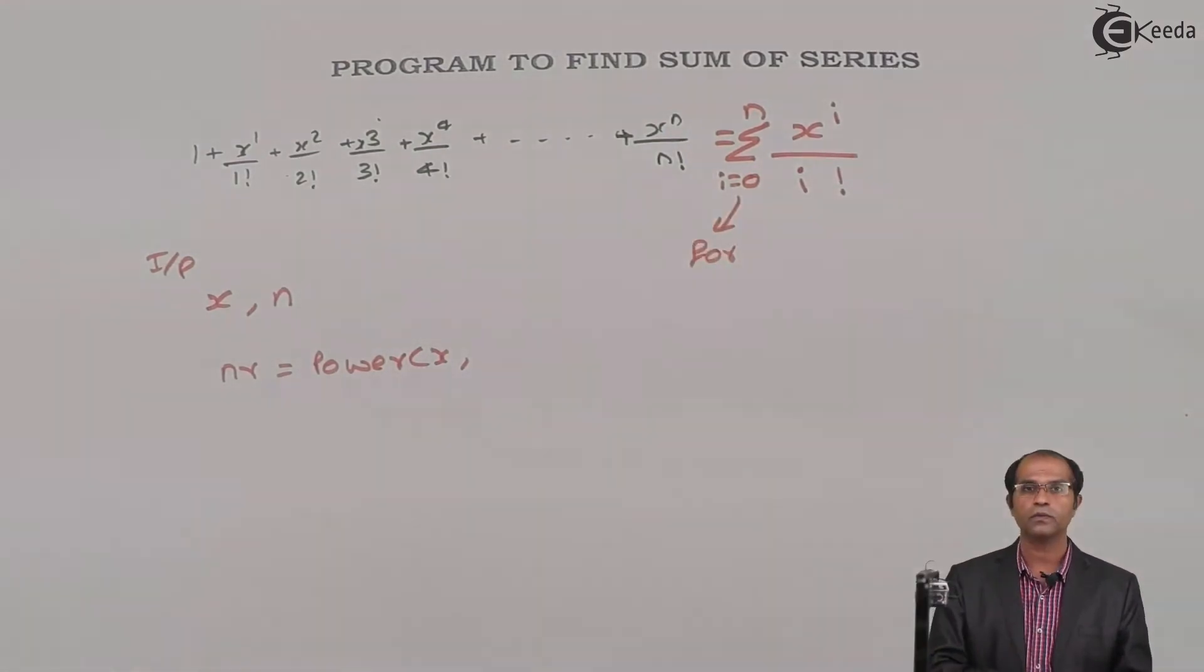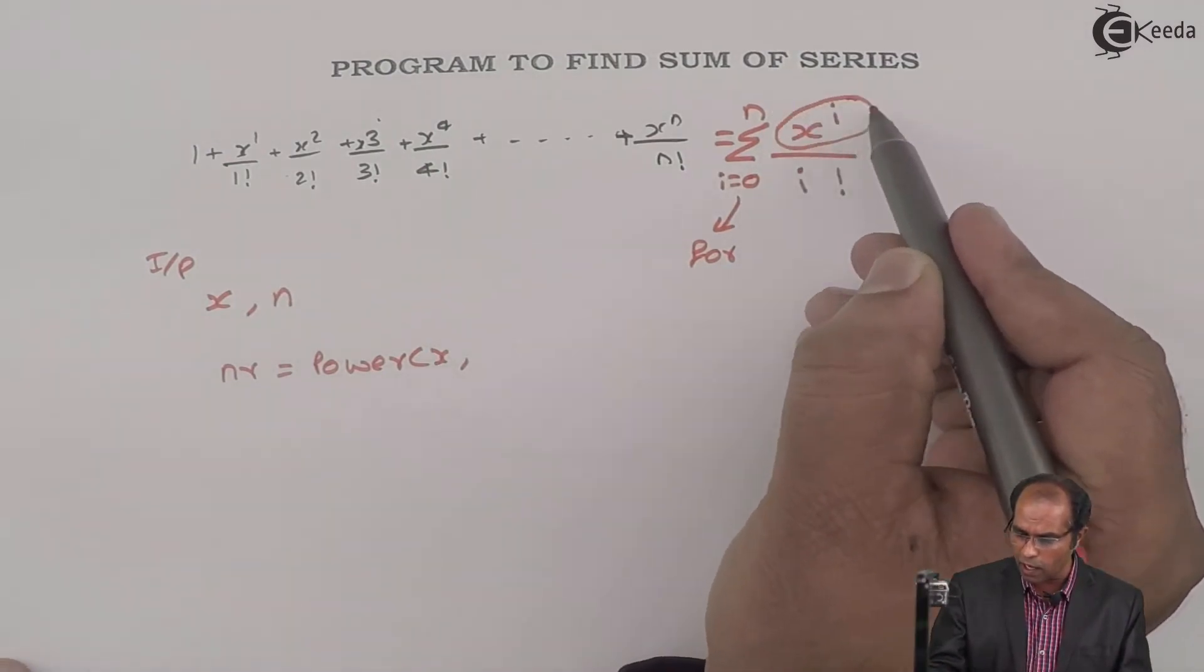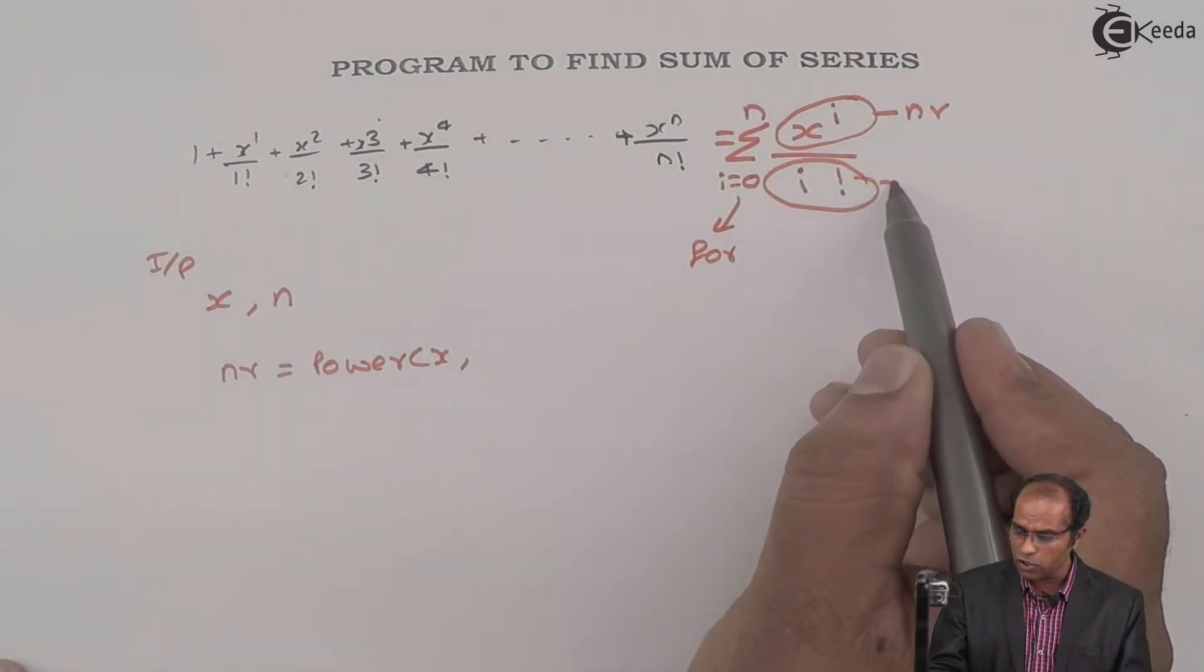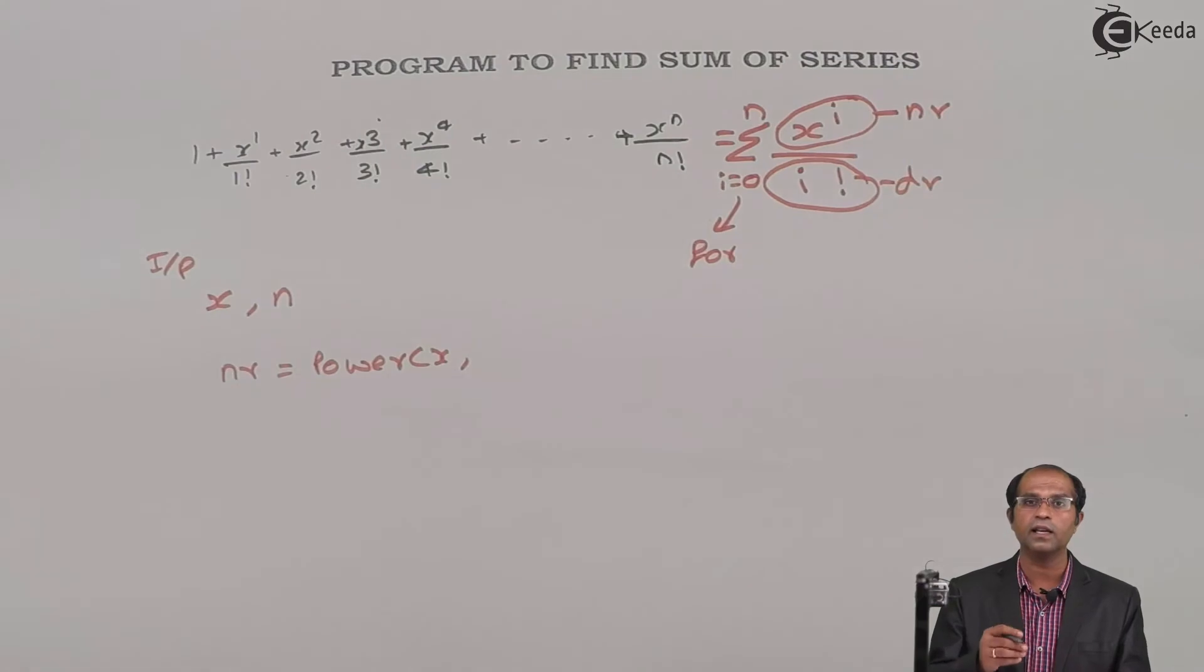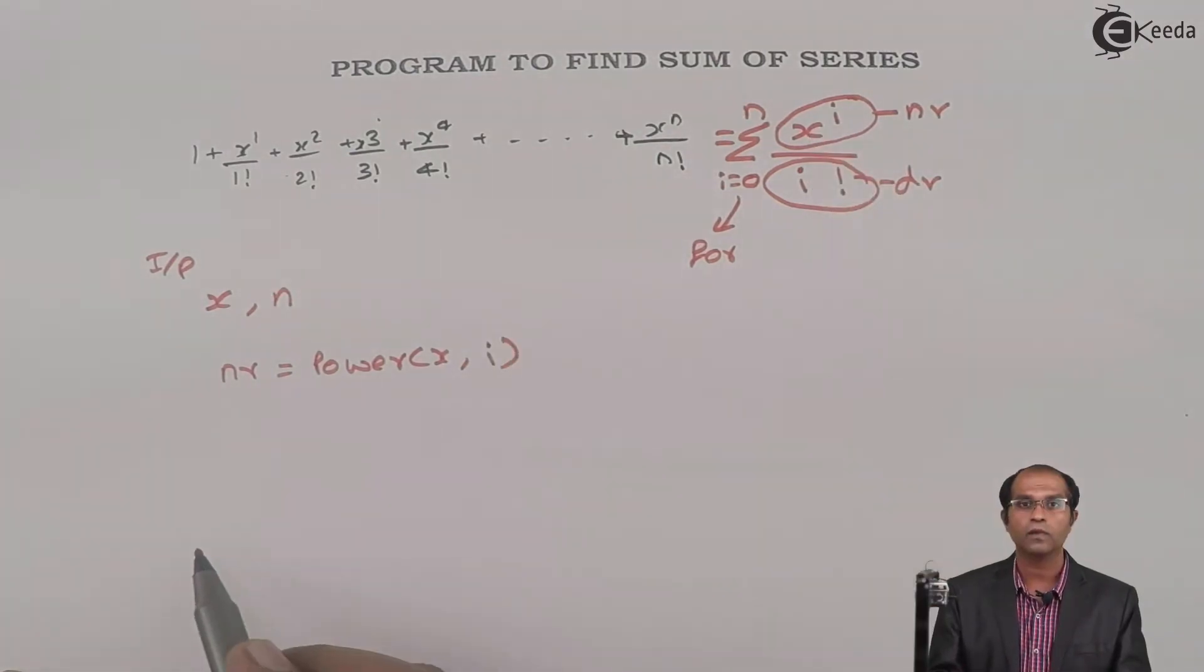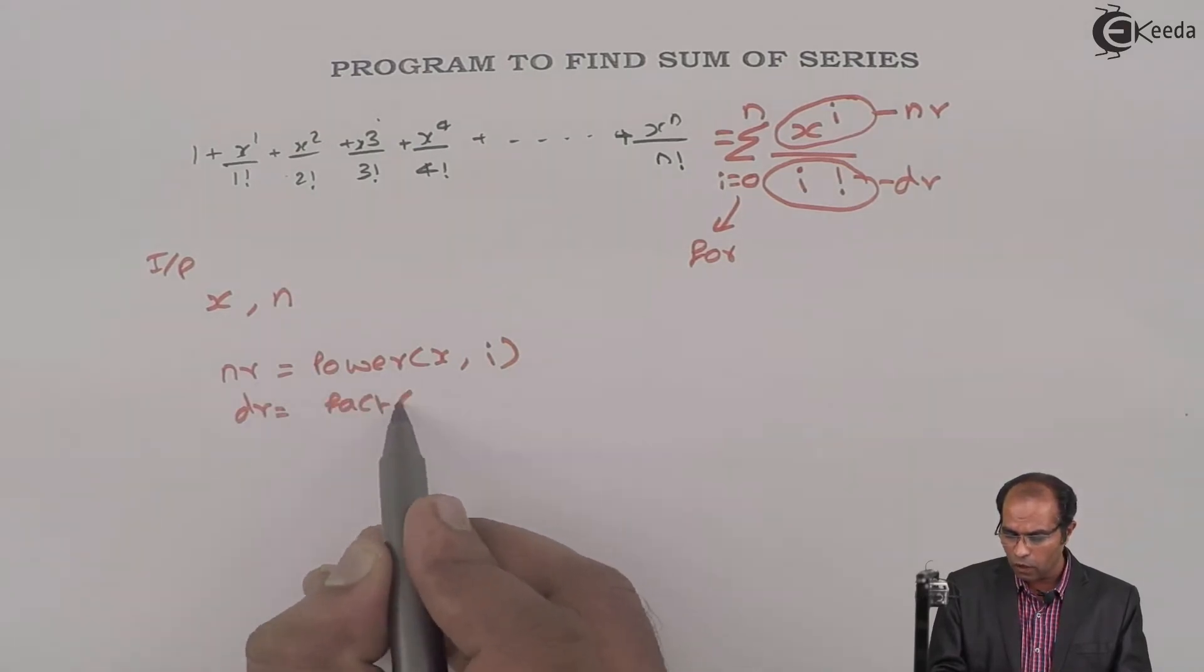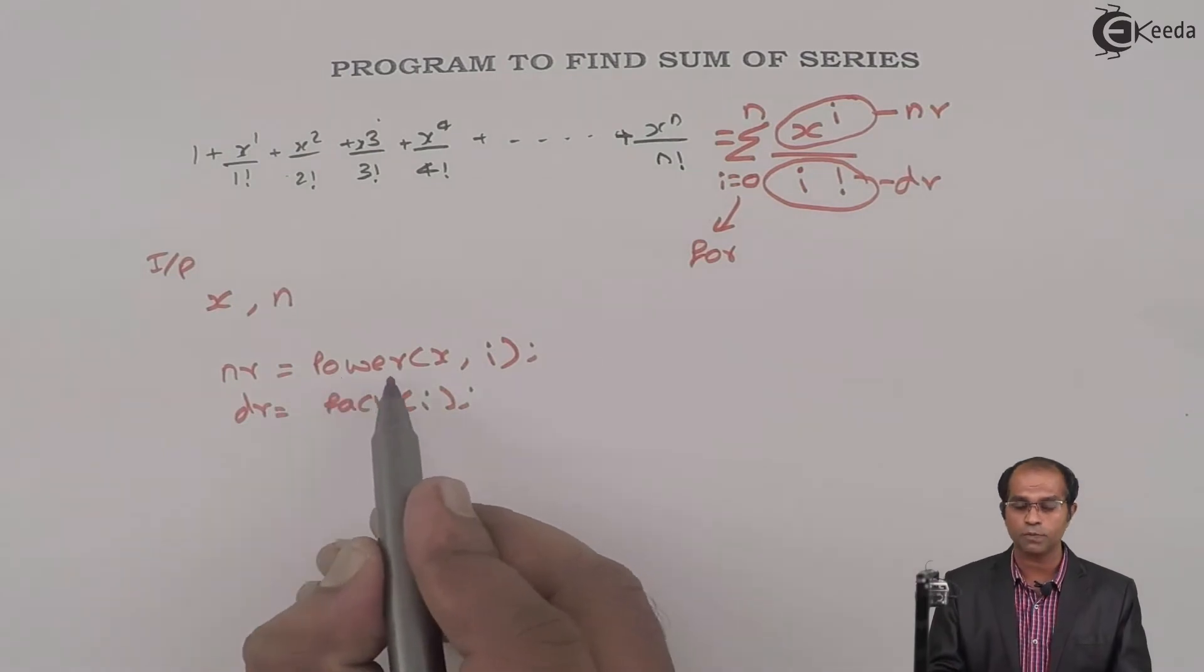The summation will always hint towards the use of a for loop. So I'll say this summation is nothing but a for loop, and this x^i is now stored as nr, and this i! is stored as dr. This nr by dr is regularly added with, say, s. Your nr is the power with base x and power i. Your dr has the factorial of i.